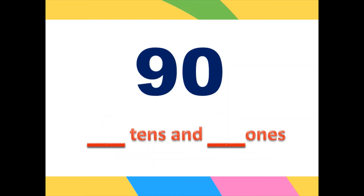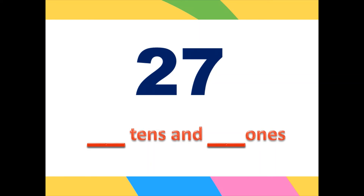Next, the number 19. We have one ten and nine ones, so we have 19. Next, 27: the digit 2 is your tens and 7 is your ones. Therefore we have two tens and seven ones — that is why we have 27.